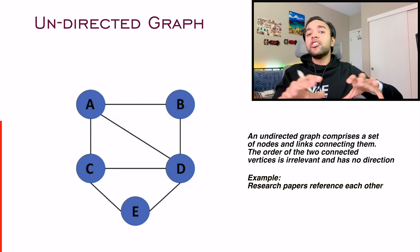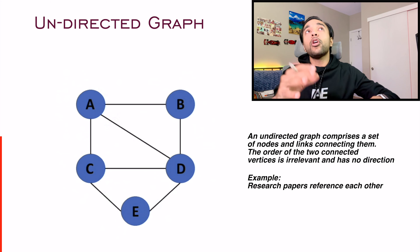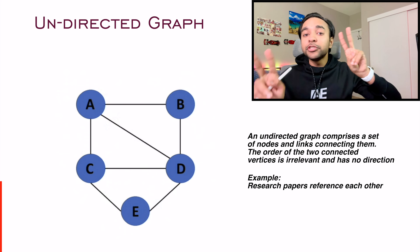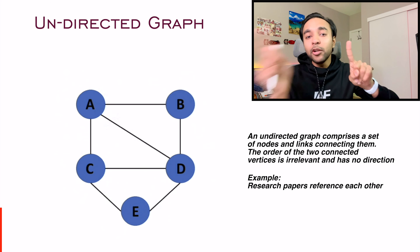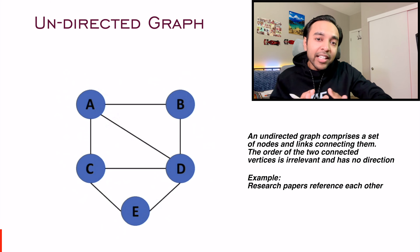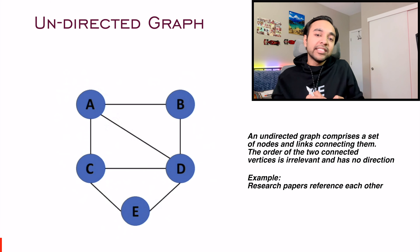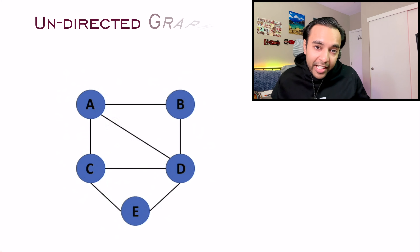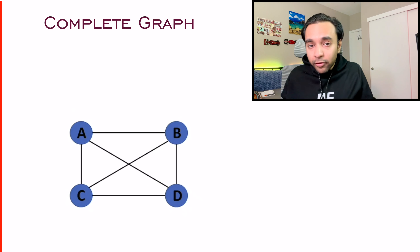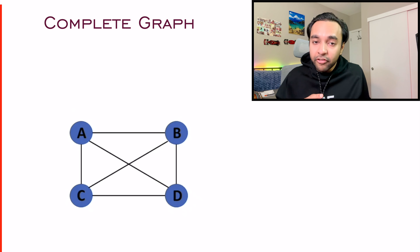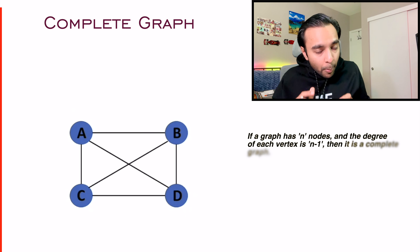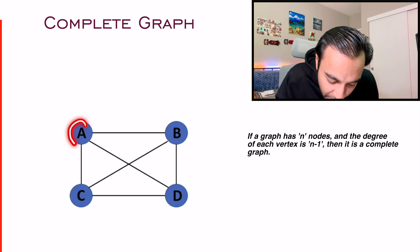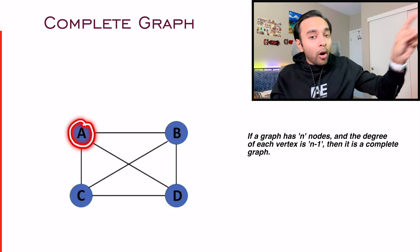Just like directed graphs, you also have undirected graphs, and that is what we have been dealing with up till now. All the nodes are connected with each other and they are bi-directional. A good example is academic research papers — two papers can reference each other, which is a great example of how an undirected graph can look.